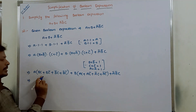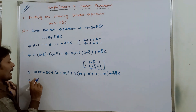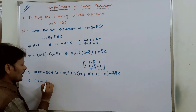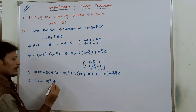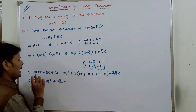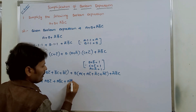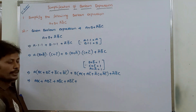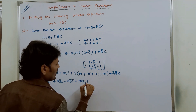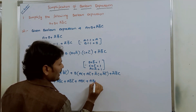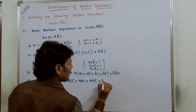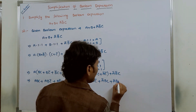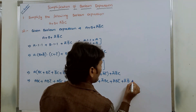Now, a is multiplied with the entire expanded first term: a·bc = abc, a·bc̄ = abc̄, a·b̄c = ab̄c, a·b̄c̄ = ab̄c̄. Next, b is multiplied with the entire expanded second term: b·ac = abc, b·ac̄ = abc̄, b·āc = ābc, b·āc̄ = ābc̄. Plus the term ā·b̄·c.